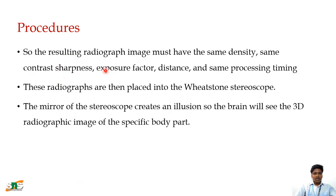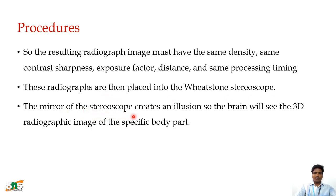The resulting radiographic images have the same density, contrast, sharpness, exposure factors, distance, and processing timings, but with a small tube rotation of 10%. These radiographs are then placed in the Wheatstone stereoscope, where the mirror of the stereoscope creates an illusion, so the brain sees a 3D illusion image of the specific body part.